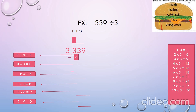Now let's subtract 3 from 3. That is 3 minus 3 equals 0. Now let's bring down the next digit, that is 3. We will get the product 3 by multiplying 1 with 3. So let us write 1 in the tens place of the quotient and 3 under 3. Now let's subtract 3 from 3. That is 3 minus 3 equals 0.